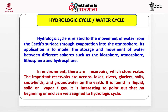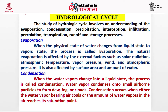The hydrological cycle is related to the movement of water from the earth's surface through evaporation into the atmosphere. Its application is to model the storage and movement of water between different spheres such as the biosphere, atmosphere, lithosphere, and hydrosphere. Important reservoirs include oceans, lakes, rivers, glaciers, soils, snow fields, and groundwater. Water is found in liquid, solid, or vapor form. No beginning or end can be assigned to the hydrological cycle. The study involves understanding evaporation, condensation, precipitation, infiltration, percolation, transpiration, runoff, and storage processes.